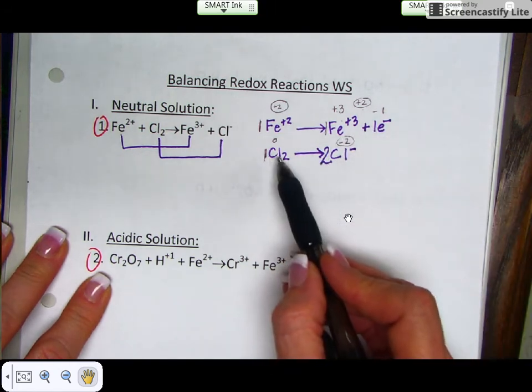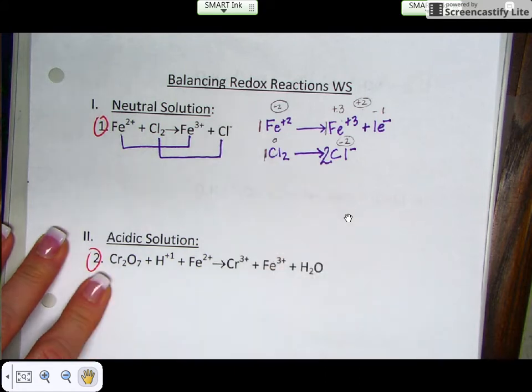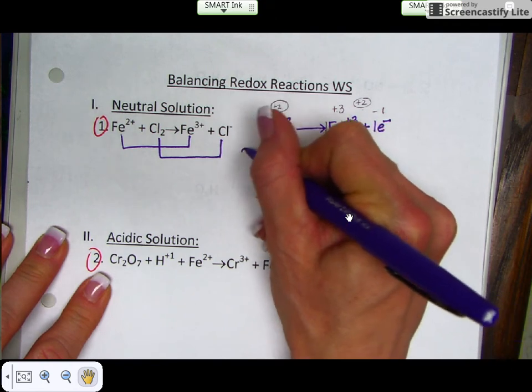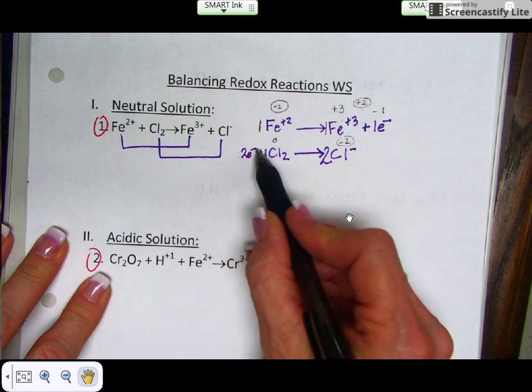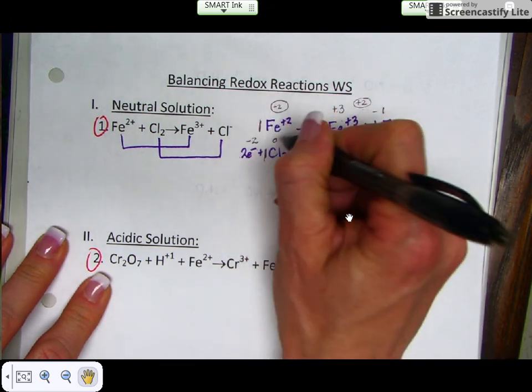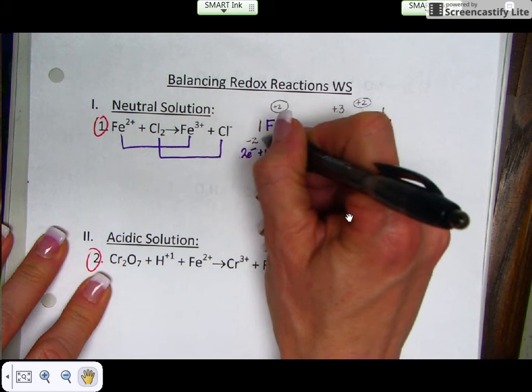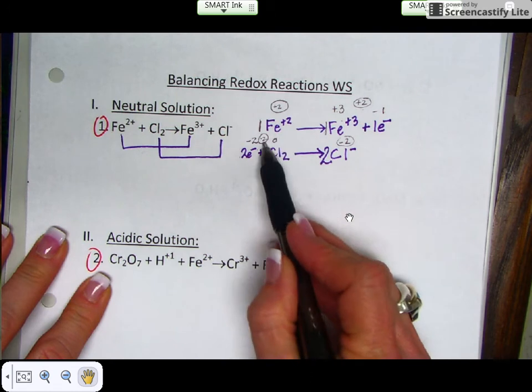So you always add your electrons to the most positive side, which is this side here. So we're going to add 2 electrons to this side. That gives you 2 times a -1, which is a -2 charge. So -2 and 0 give you an overall -2. So now both sides here have a -2 charge.